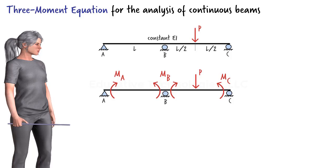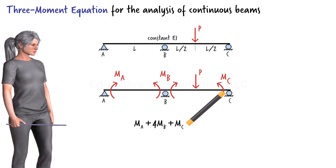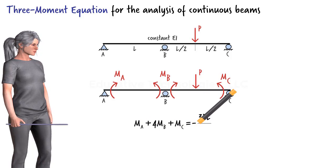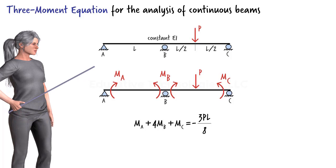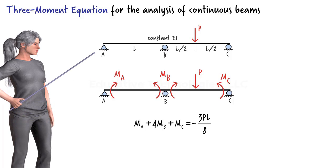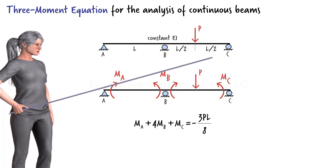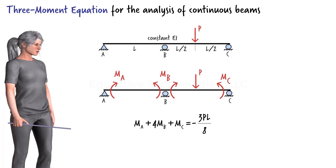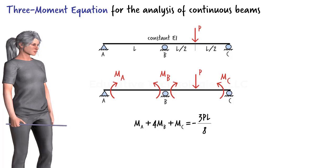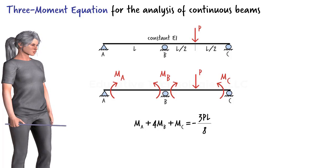The three-moment equation for this specific beam can be written as shown. Since in this case there is a pin at A and a roller at C, the moments at A and C equal zero. Therefore, the equation can be simplified.